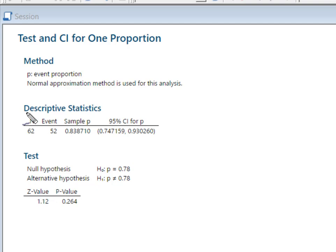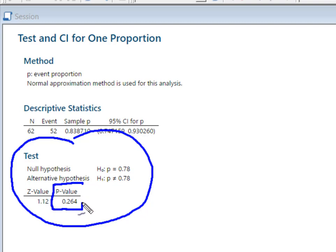We can see, as always, it gave us our descriptive statistics. But this is what we're interested in down here, this actual test that was run. What we're looking for this time is our p-value. I just want to remind you that this p-value, because it was not equal to, represents the area above and below this calculated z-value.